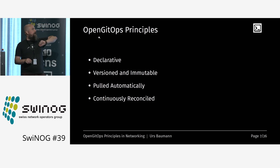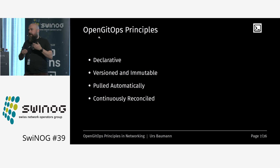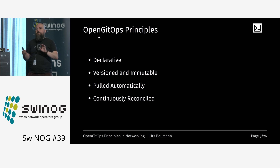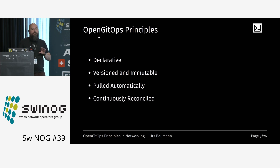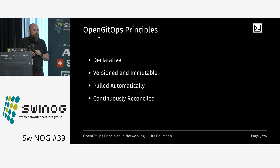Pulling automatically is combined with the fourth principle: continuously reconciled. That means there is always a process checking if the desired state is still present. The typical example is Kubernetes — it's common there because Kubernetes makes this easy. If we have a deployment and someone kills a pod, it just gets started automatically. That's the idea of Kubernetes and container platforms: all containers can die at any time and we just reconcile and create again.